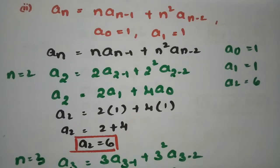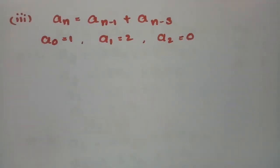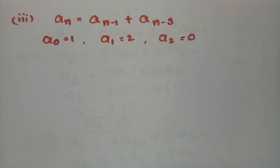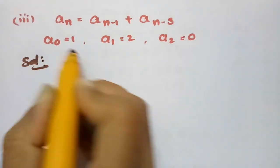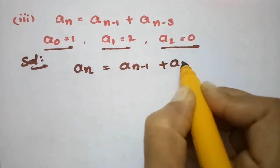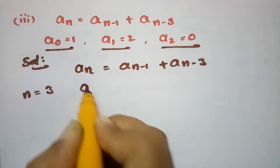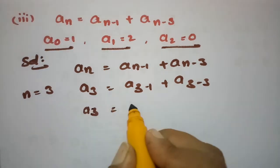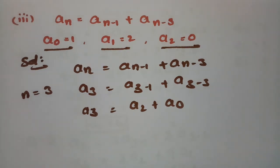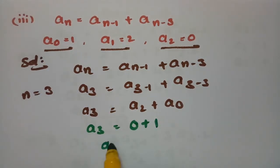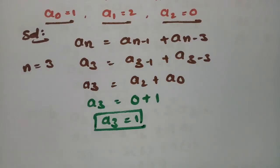The next recurrence relation is a_n = a_{n-1} + a_{n-3}, with initial values a_0 = 1, a_1 = 2, a_2 = 0. We need a_3 and a_4 for the first five terms. Put n = 3: a_3 = a_2 + a_0 = 0 + 1 = 1.